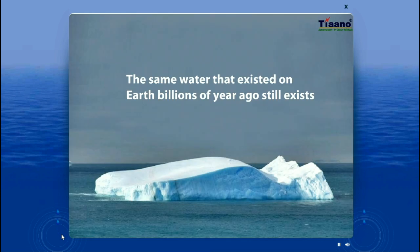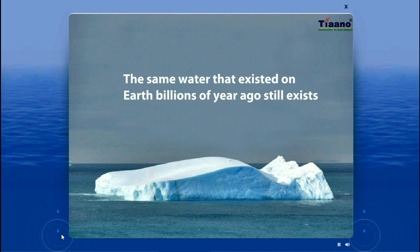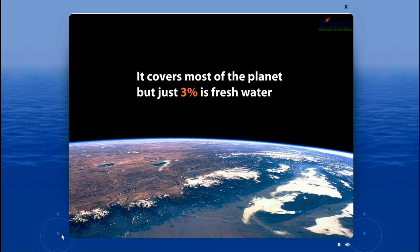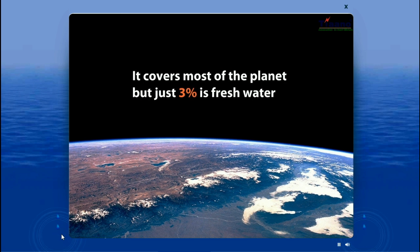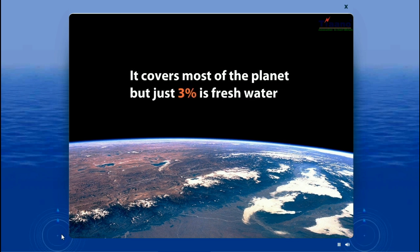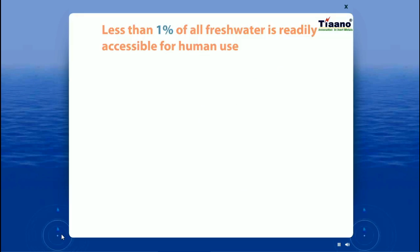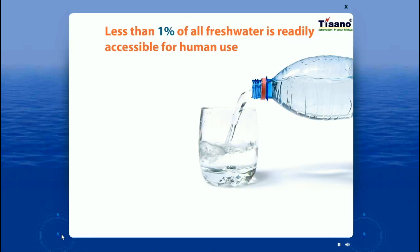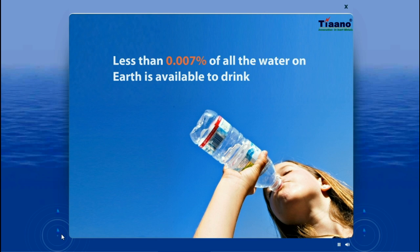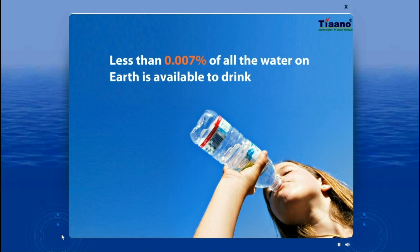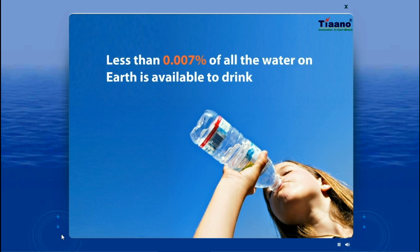The same water that existed on Earth billions of years ago still exists. It covers most of the planet, but just 3% is fresh water, and most of that is ice. Less than 1% of all fresh water is readily accessible for human use, and of that, less than 0.007% is drinkable.